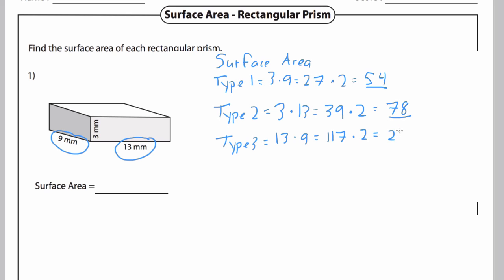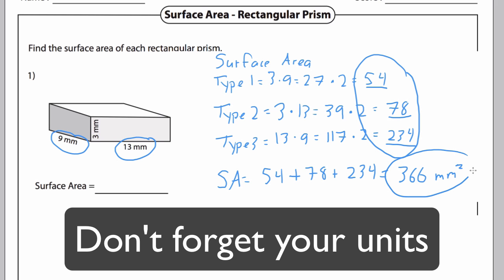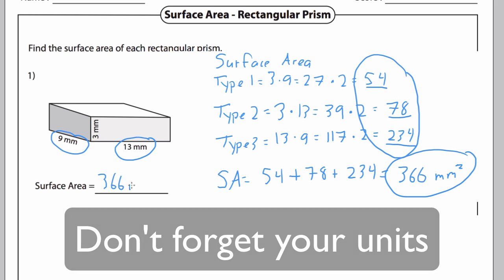Now that I have type 1, type 2, and type 3, all I have to do is add those up. Surface area is 54 plus 78 plus 234, which gives me a grand total of 366 millimeters squared. And that's how you do it.